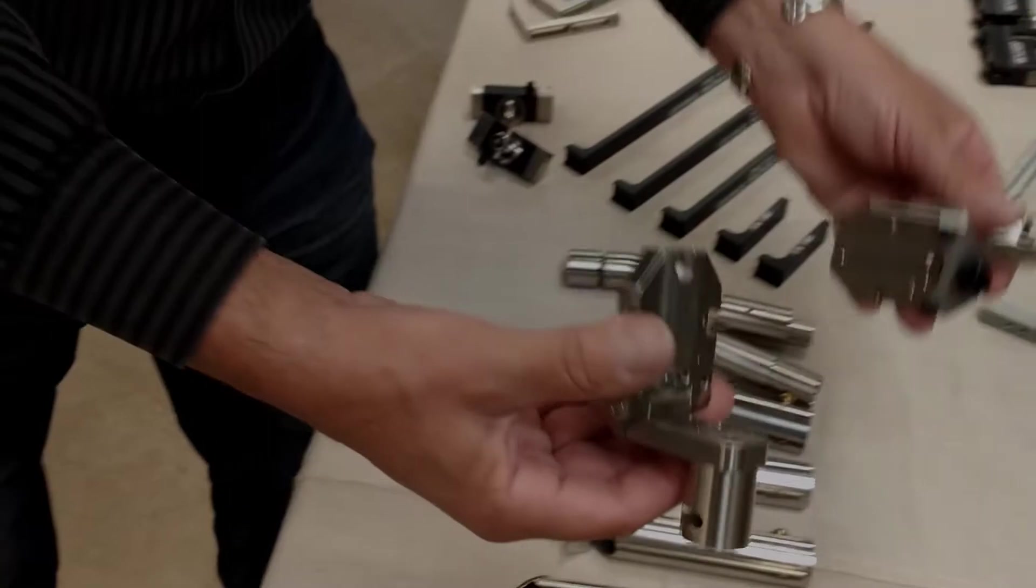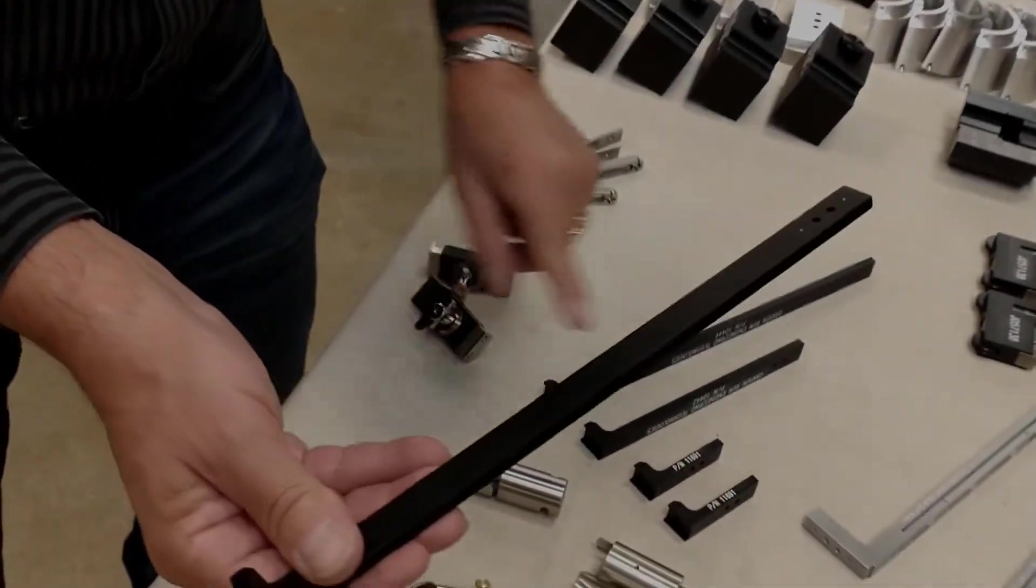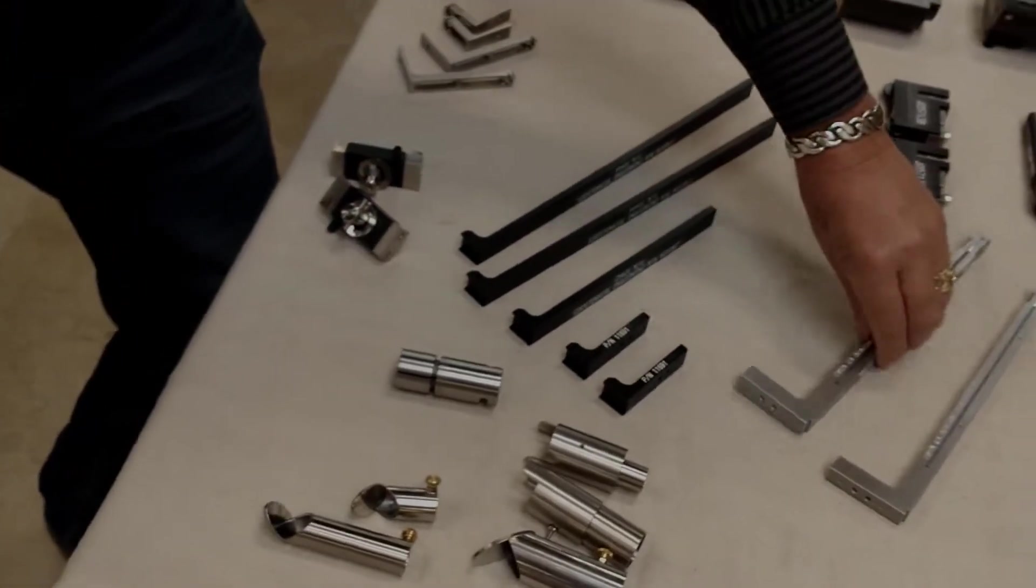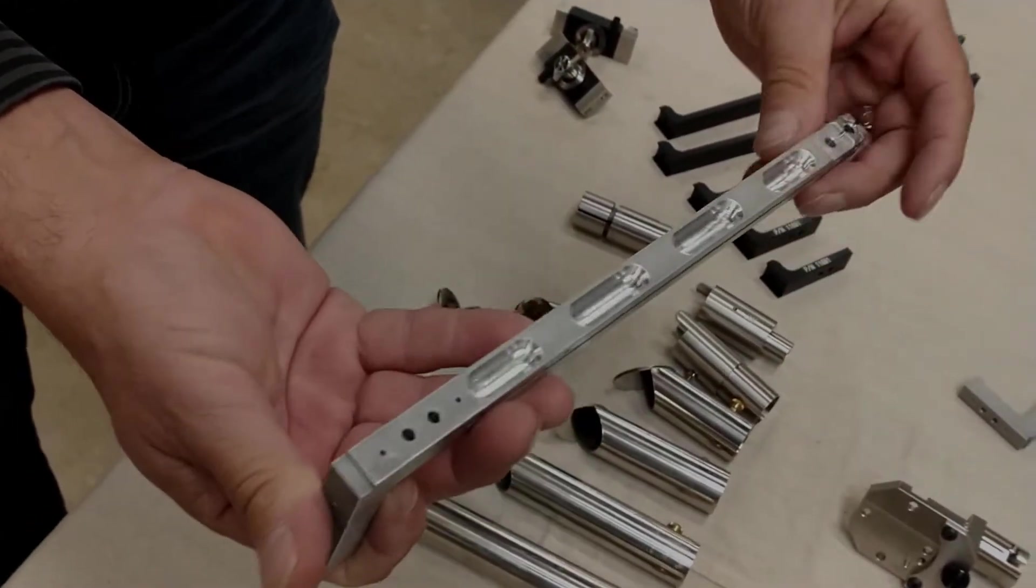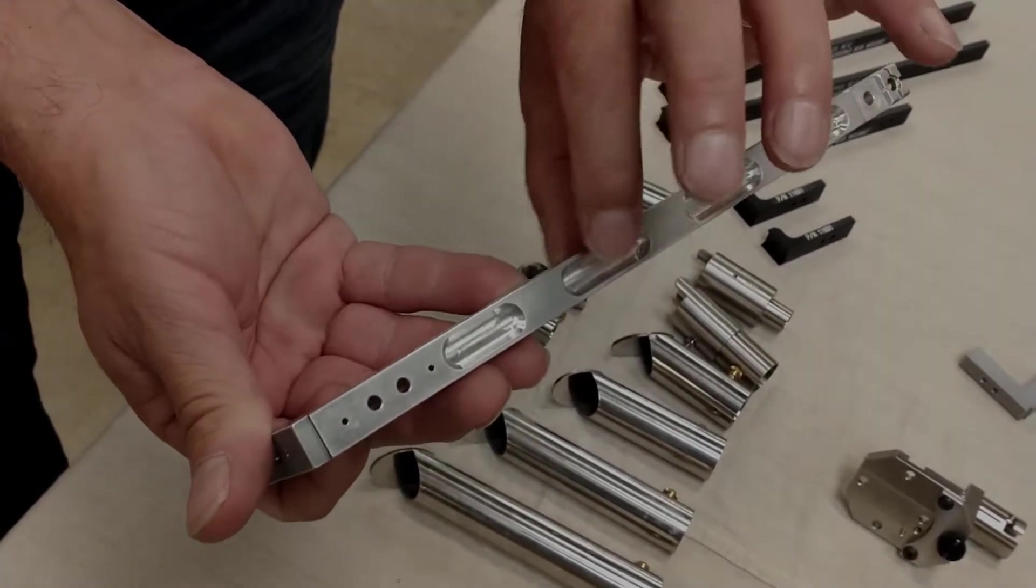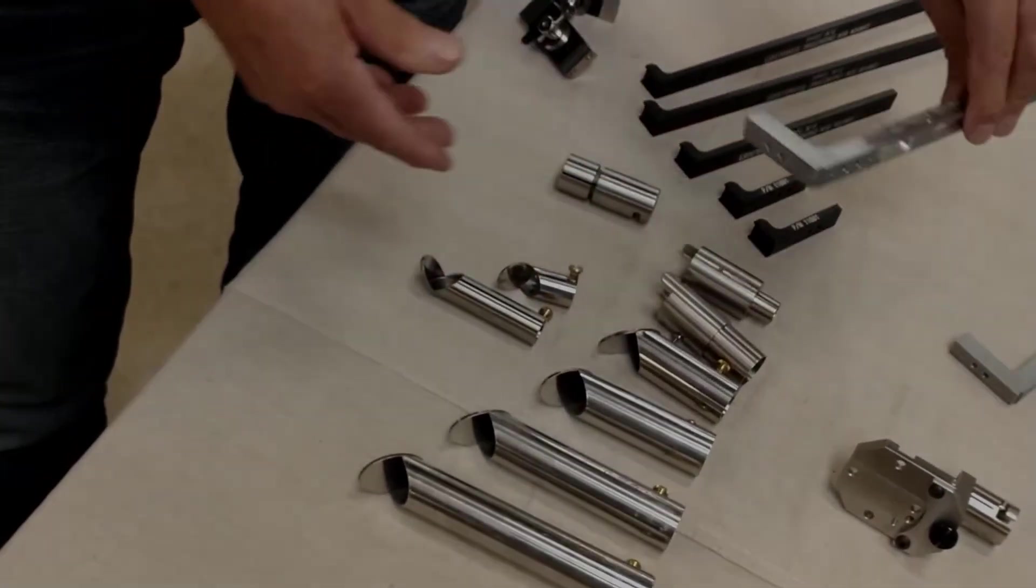So this is one of our stock items. These are more eddy current probe holders. Again, long, medium, short. Another style here. Again, weight was an issue, so we tried to reduce as much of the weight out of it as we could when it's cantilevered out off the end of the inspection arm.